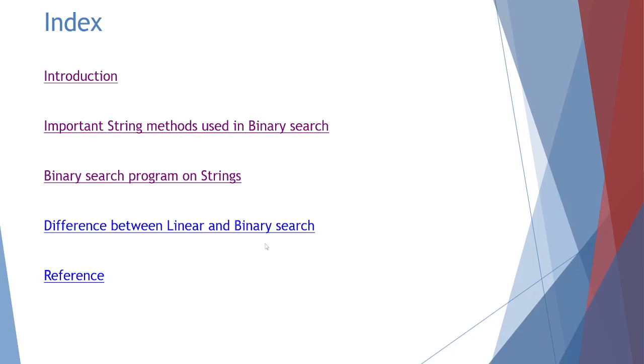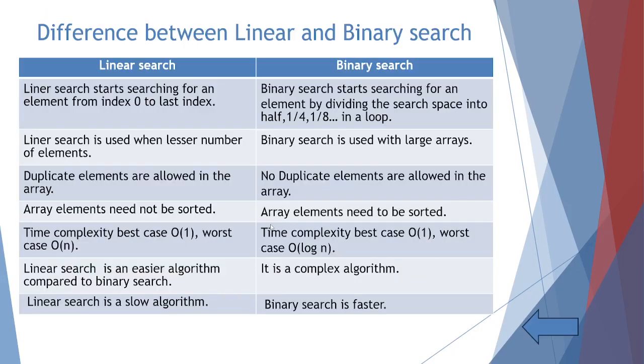Difference between linear and binary search. Linear search starts searching for an element from index zero to last index. But binary search virtually divides the search space into half, one-fourth, one-by-eighth in a loop. Linear search is used when lesser number of elements are there in the array. And binary search used with large arrays. Duplicate elements are allowed in the array in linear search. But binary search does not allow duplicate elements. And also the array needs to be sorted in binary search. Whereas in linear search need not be sorted.